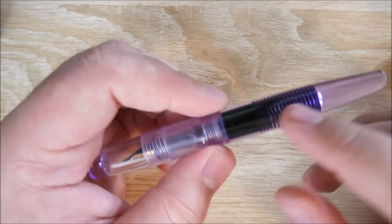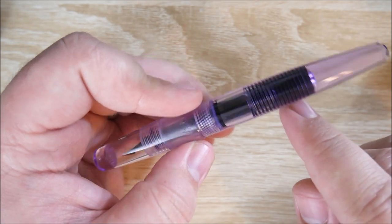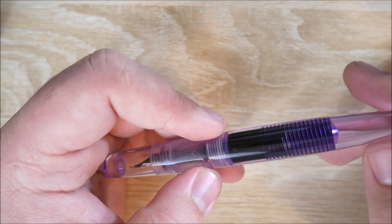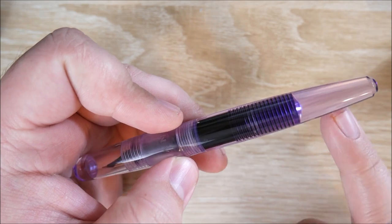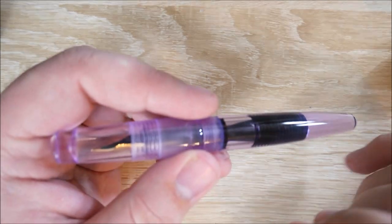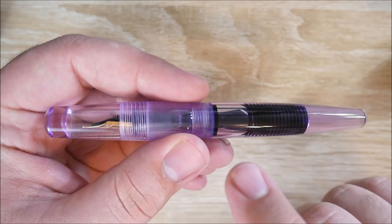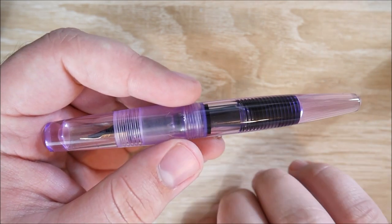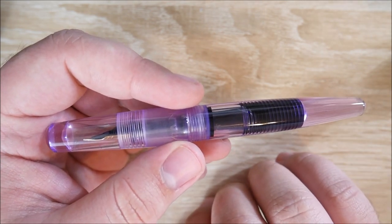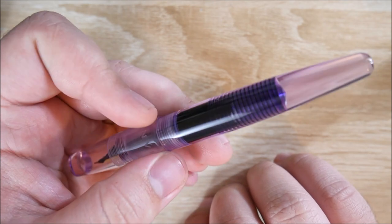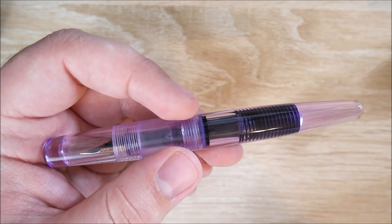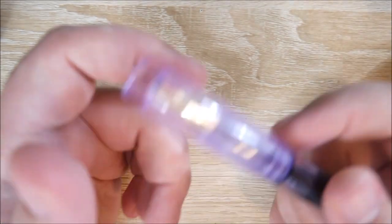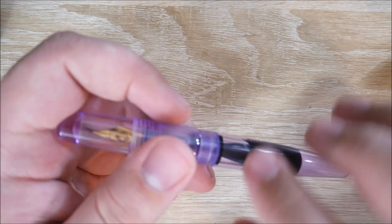The ink capacity is also really good. Obviously, you can eyedropper fill this. Probably about a mil and a half, two milliliters. It's a decent capacity. They definitely could have pulled it back a little bit more with that. But I don't mind, actually, because it kind of mirrors that front part. So that's fine with me. I'm okay with them giving up a little bit of that space, because it's not really going to bother me anyway. This pen holds a ton of ink. And you can use a converter or a cartridge with it as well, although it doesn't come with one, so keep that in mind.